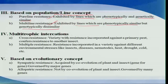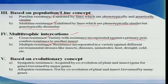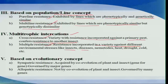Based on multitrophic interactions, we have either cross resistance or multiple resistance. Cross resistance means that resistance incorporated primarily against the primary pest also imparts resistance to another insect. Multiple resistance is quite robust, showing resistance against a variety of environmental stresses including insects, diseases, nematodes, etc.